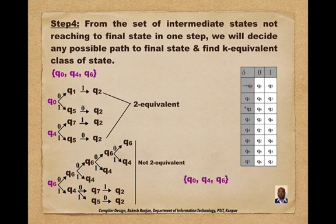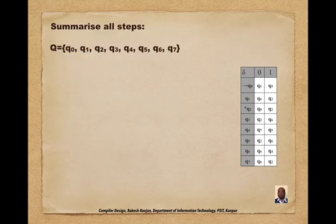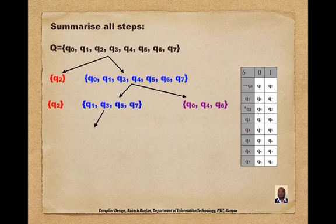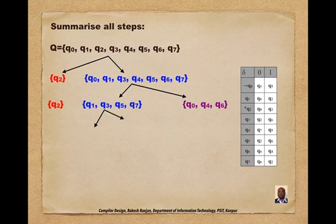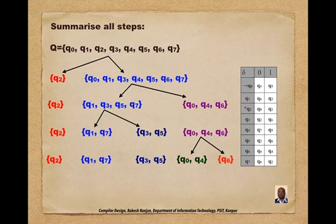So the complete set Q of states q0–q7 has now been divided into five groups: {q2} as the single final state, {q1, q7} treated as a single state, {q3, q5} treated as a single state, {q0, q4} treated as a single state, and {q6} treated as a single state.